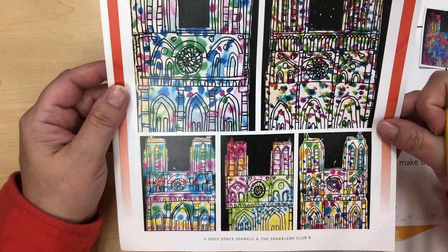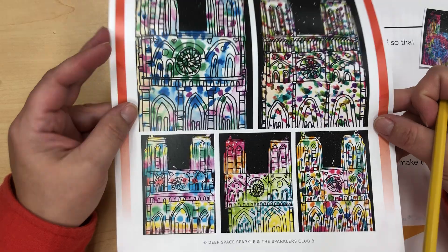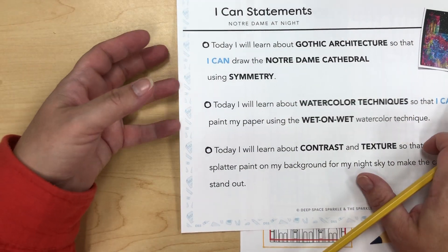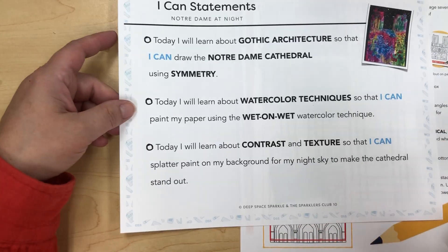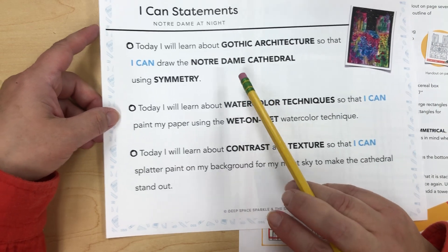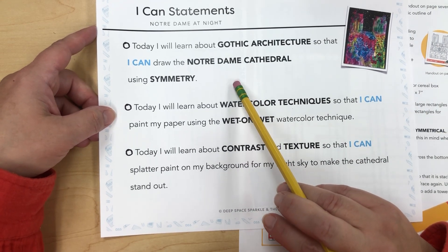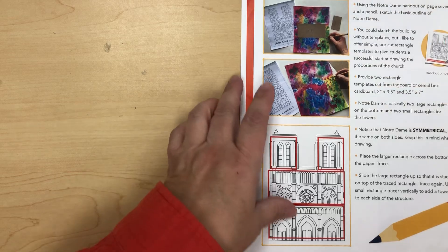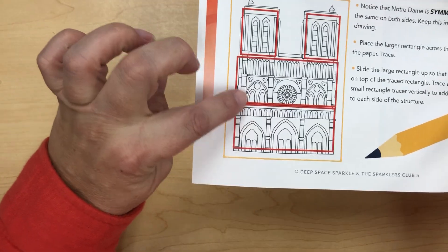I hope you guys get to the actual marker today, but if not we'll hold on to next week. Our 'I can' statement today is: today we will learn about gothic architecture so that I can draw the Notre Dame Cathedral using symmetry.